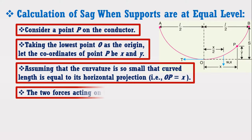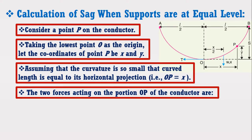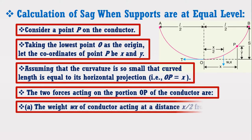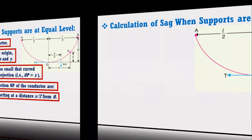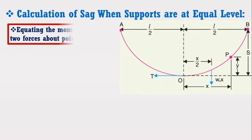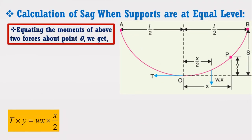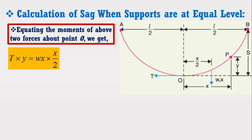The two forces acting on the portion OP of the conductor are: A — the weight WX of the conductor acting at a distance X upon 2 from O, and B — the tension T acting at O. Equating the moments of these two forces about point O, we get an expression from which the formula for Y is derived.